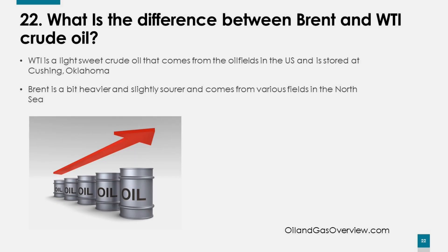What is the difference between Brent and WTI crude oil? WTI is a light sweet crude oil that comes from oil fields in the U.S. and is stored at Cushing, Oklahoma. Brent is a bit heavier and slightly more sour, and comes from various fields in the North Sea.